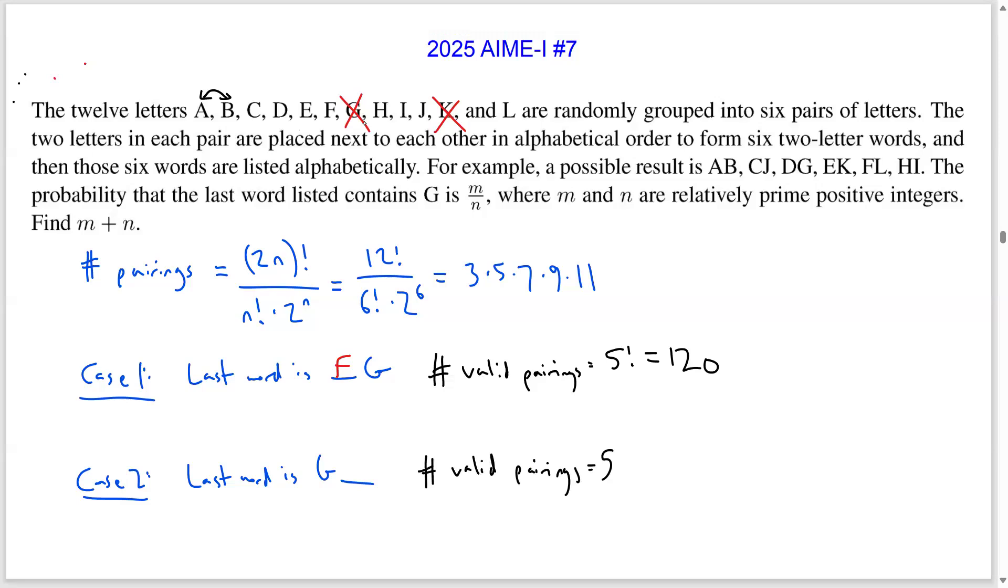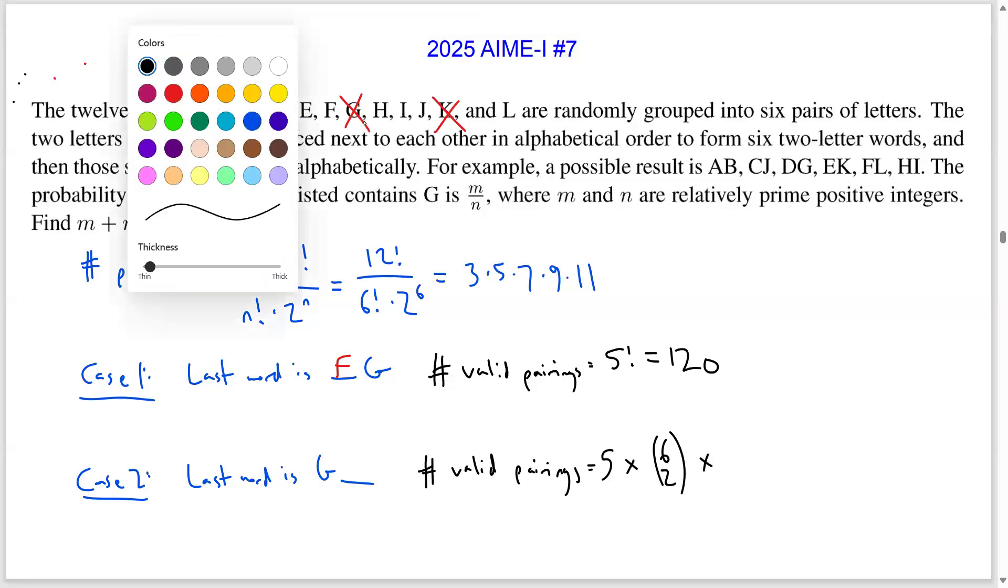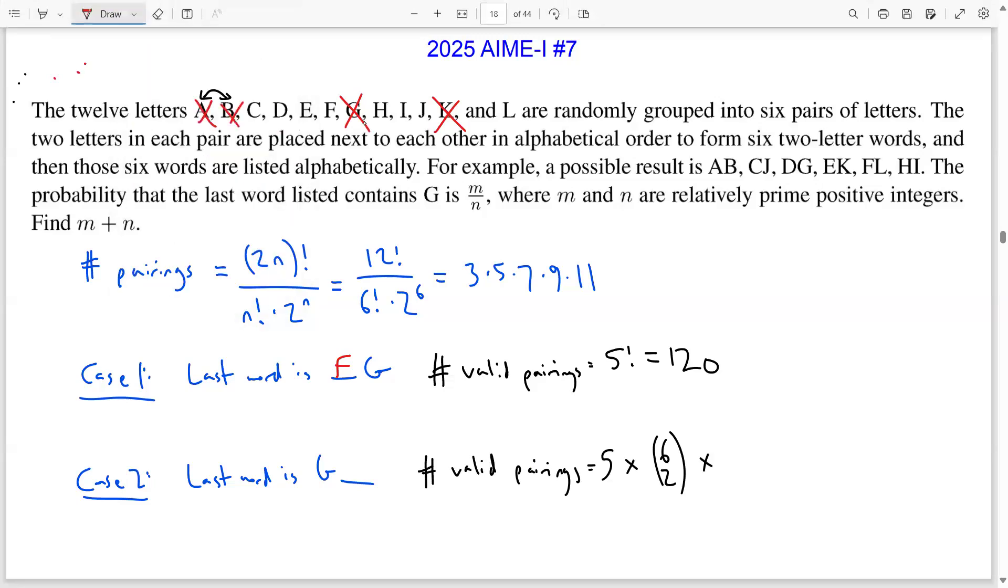So for case two, there are five ways to choose the letter that gets paired with G, it has to go after G in the alphabet. And then we have to choose two out of the six letters before G that get paired with each other. And then once we do that, we're going to be left with four letters that go before G and four letters that go after G. And no matter what happens, there will be 4 factorial ways to pair them up. So this leads to 1,800 valid pairings where the last word starts with G.